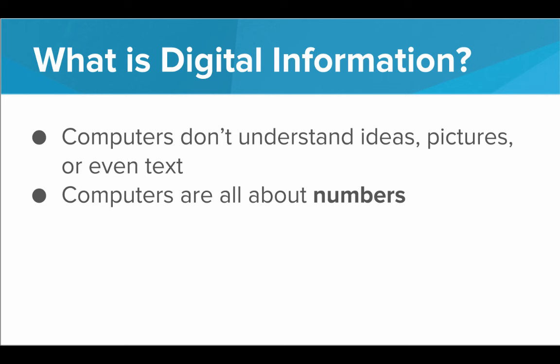They can move numbers from box A to box B, add numbers together really quickly, subtract numbers really quickly, and they can do this a million times per second. So if we want computers to work with pictures and text — the type of information useful to humans — we need to break this information down into numbers, because numbers are what are useful for computers.